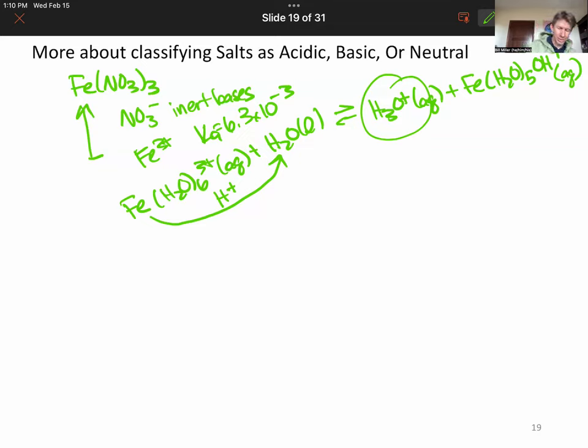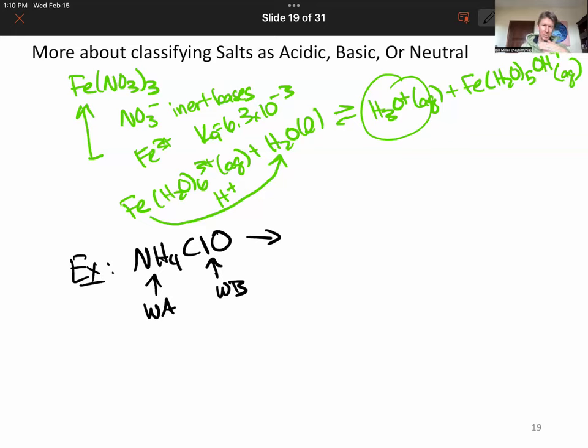Let's do another example. This is going to be ammonium hypochlorite. This is actually related to the bicarbonates, though slightly different. Now we have a weak acid and we have a weak base. We can prove that. HClO has a Ka value.